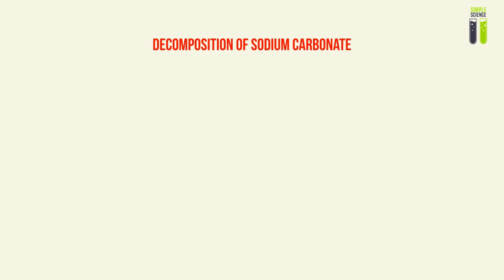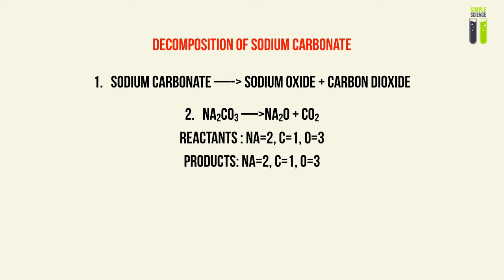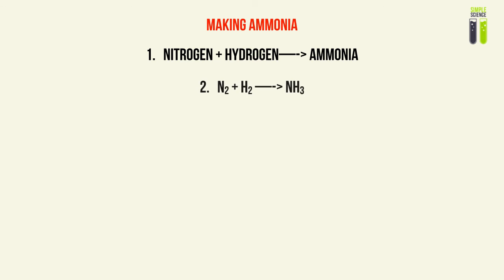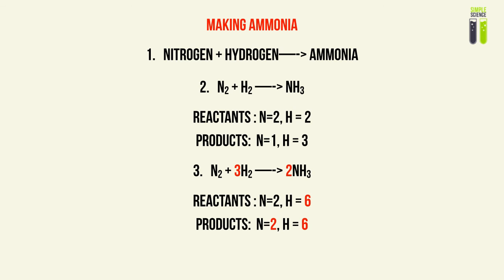For the decomposition of sodium carbonate, write it down, but in this case the number of atoms for each respective element is already the same for products and reactants, so you don't change anything — that is your correct balanced equation. Our final example is making ammonia in the Haber process, where nitrogen and hydrogen react to form ammonia. Write down the respective elements and compounds, then compare the numbers — you'll see there are twice as many nitrogen atoms, so you must play with the coefficients to balance it.